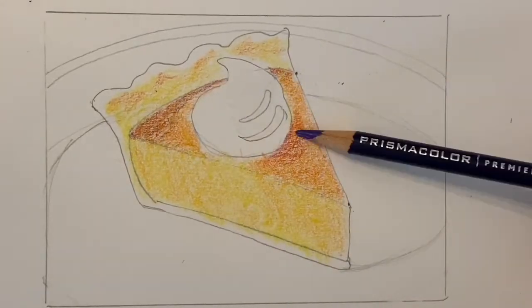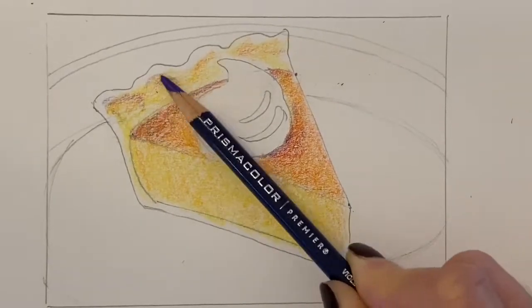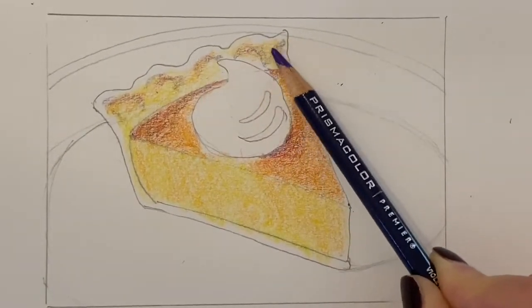I'll add in some purple to the same two areas as well especially along where the crust is and I'll add some purple to the crust to darken it and add some texture and contrast.